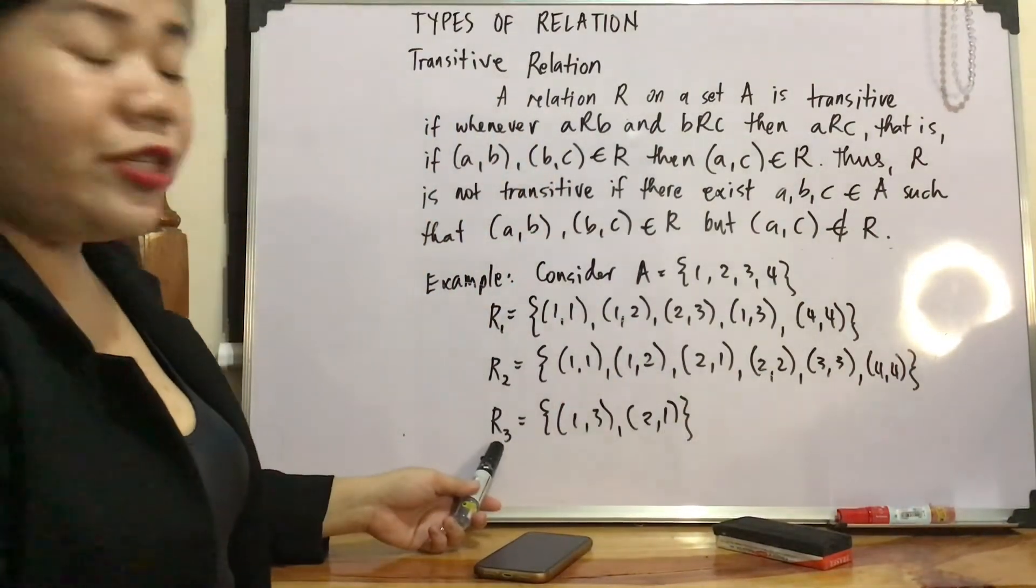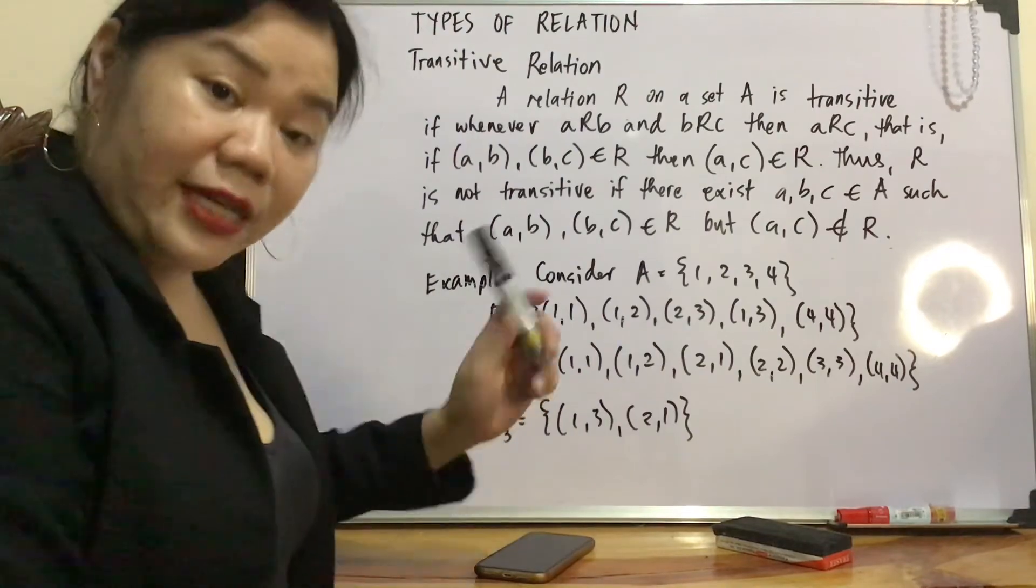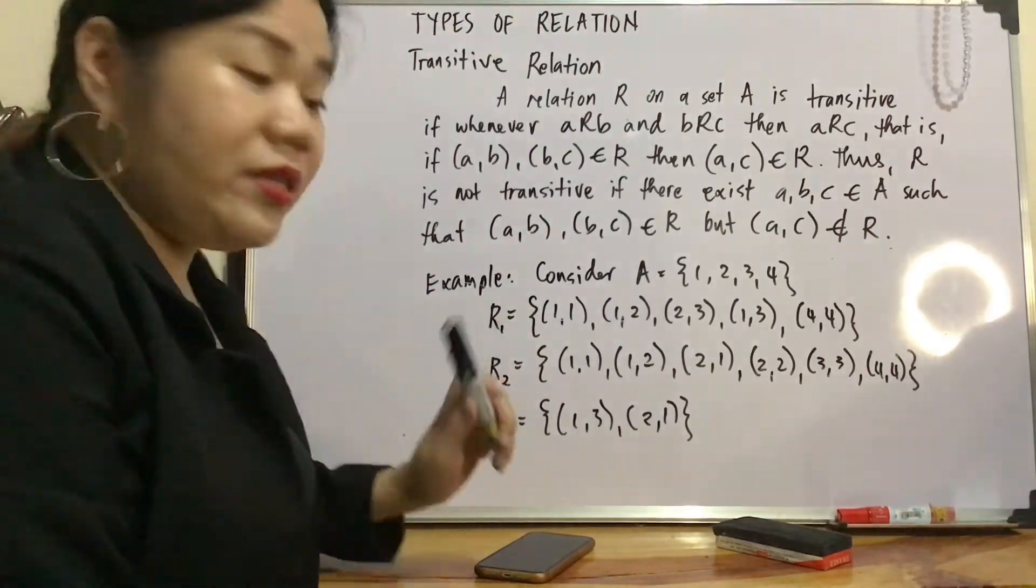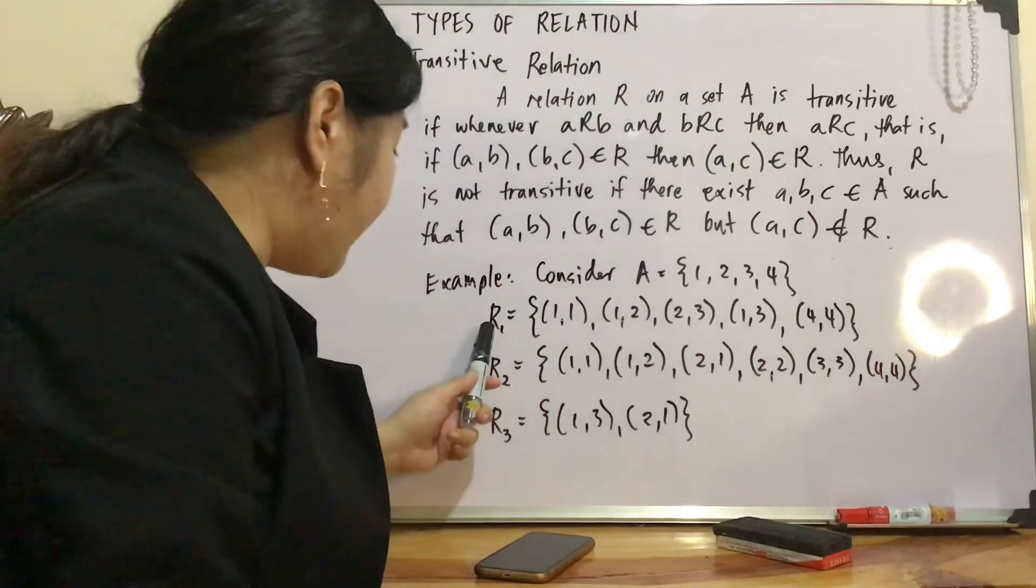And R3, relation 3, containing {(1,3), (2,1)}. Alright, let's examine whether these relations are transitive or not transitive.